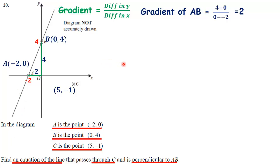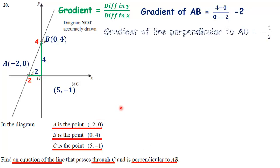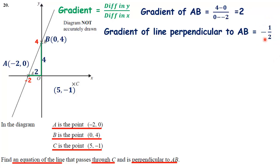The gradient of AB is two. That means the gradient of the line perpendicular to AB — which is what we want — is going to be minus one over two, i.e., minus a half. You flip it to get the reciprocal, one over two, and it's always negative. This is a fact you need to know: the gradient of a perpendicular line is the negative reciprocal of the original gradient.